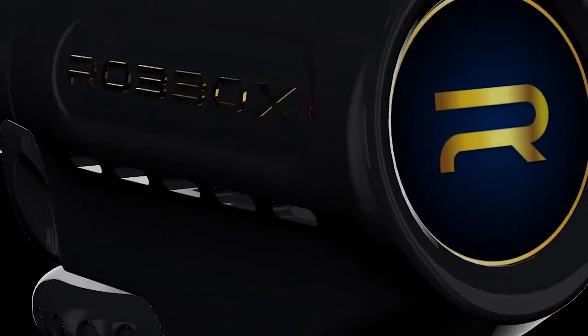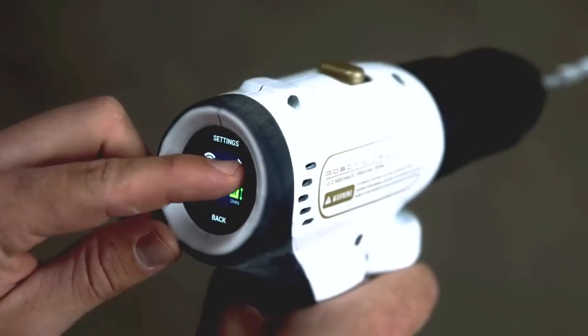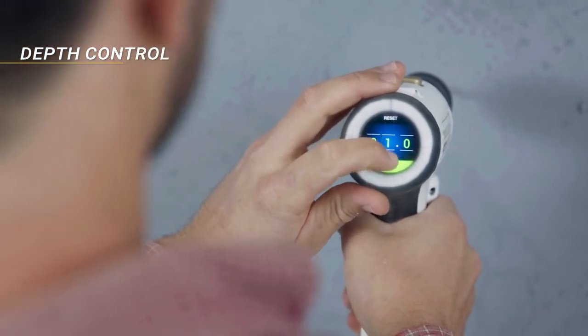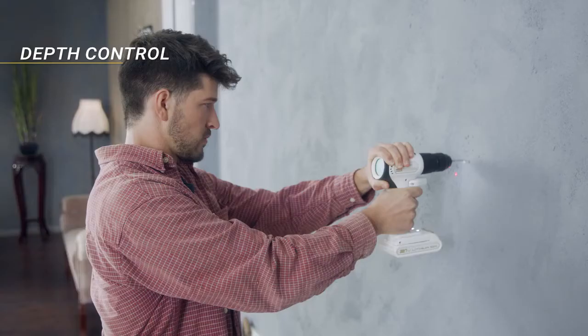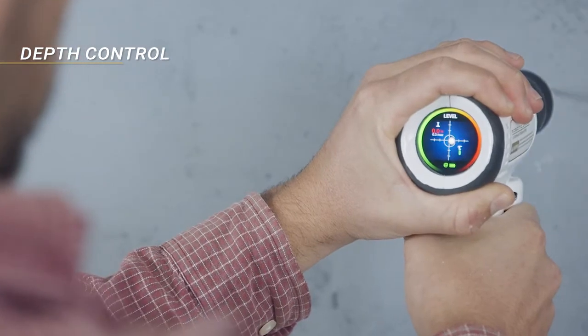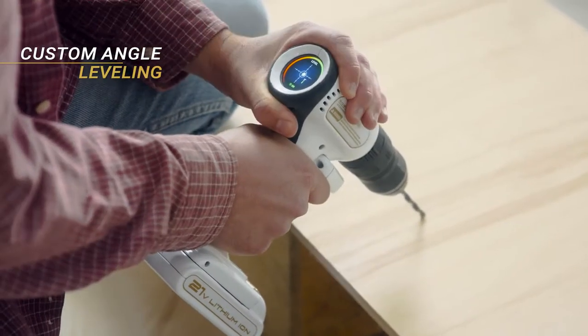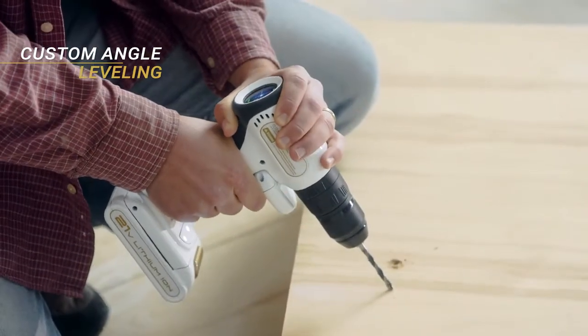Then our imagination came up with auto-set features. A smart drill allows for that. First, there's depth control. Set up how many inches or centimeters you want to go into the wall, and the drill stops automatically when you reach it. Second is custom angle leveling. Tap, save an angle, and any two holes you drill will have the same angle.